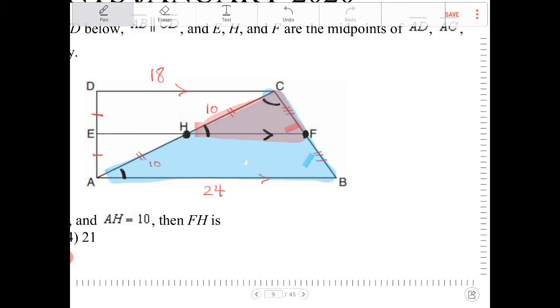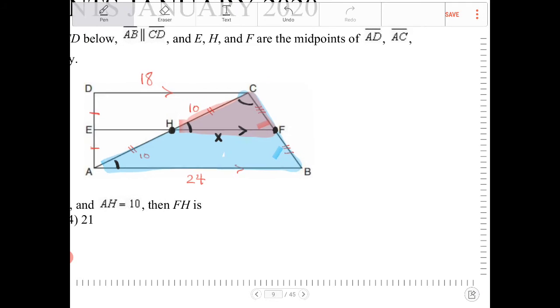So I want to call that X right there. So I know that X to 10, and which 10 am I referring to? I'm referring to this 10 right here. X divided by 10. So this is for triangle HCF. This proportion should hold true compared to the big triangle, ACB.